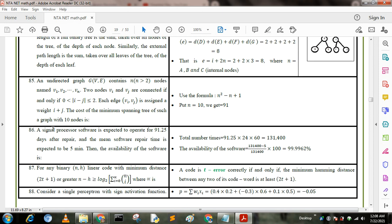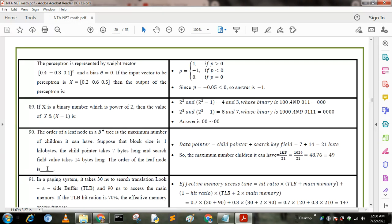Next question: a signal processor software is expected to operate for 91.25 days after repair, and the mean software repair time is expected to be 5 minutes. Then the availability of the software is: 131,400 minus 5 by 131,400 into 100. We get 99.962%.